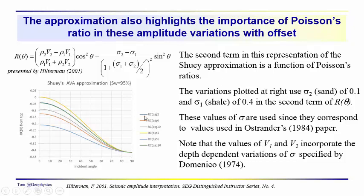The variations that we see here at the left actually have a sigma 2 for the sand of 0.1 and a sigma 1 of 0.4 in the second term here.